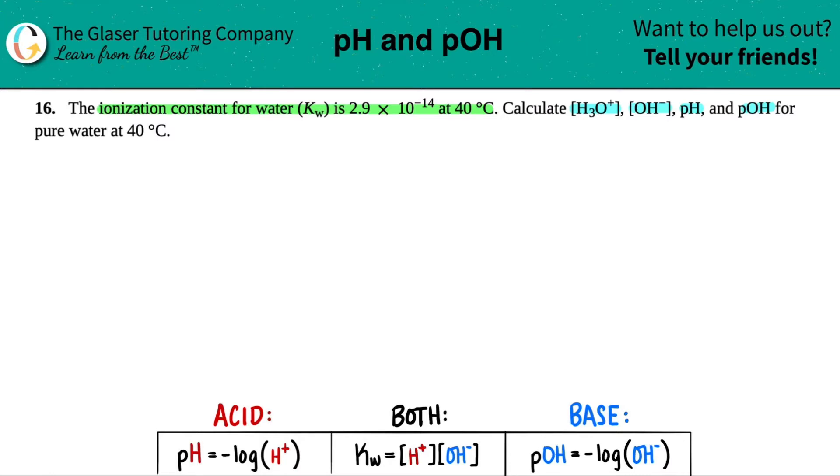The only thing they gave us was the Kw, so we can use this formula because they gave us Kw. Let's write that out: Kw = 2.9 × 10^-14. Now in this case we have to find out the hydroxide OH- and the hydronium H3O+.